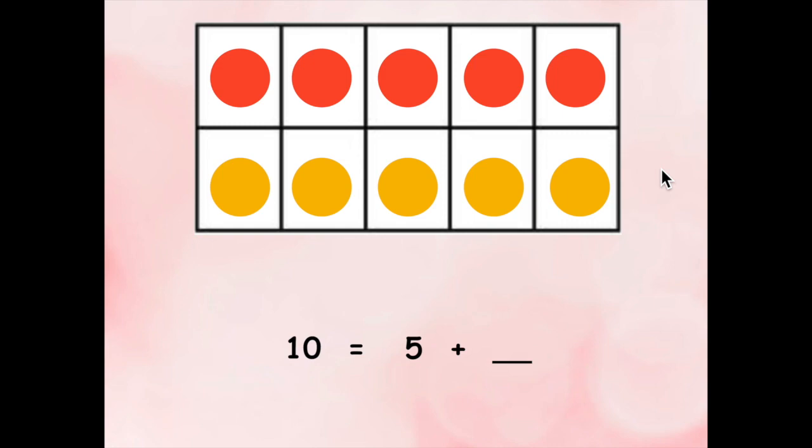Can you write the equation to show the missing part of 10? You should have written 10 equals five plus five. And that's it. That's how you use a 10 frame to find the missing part of 10.